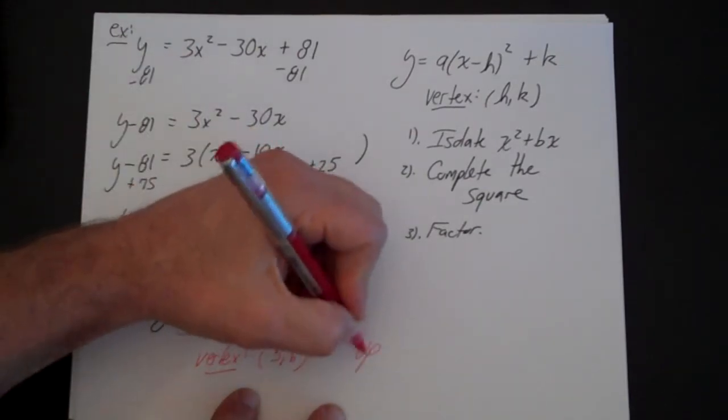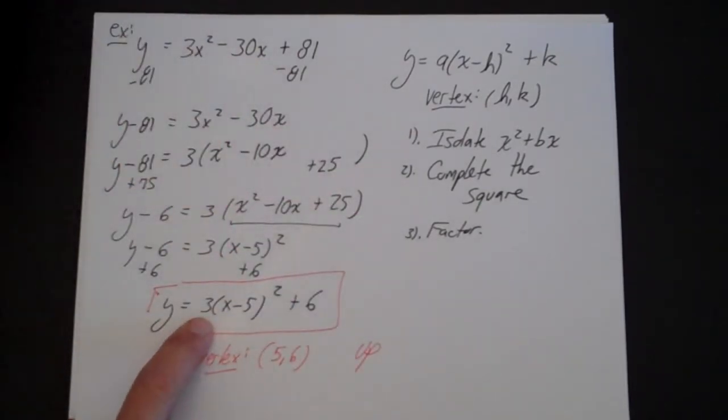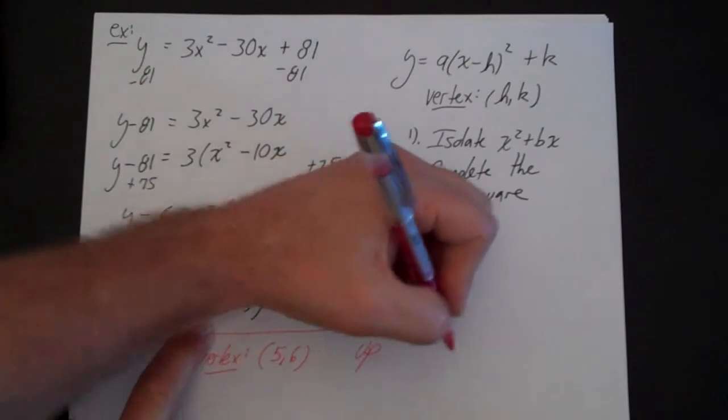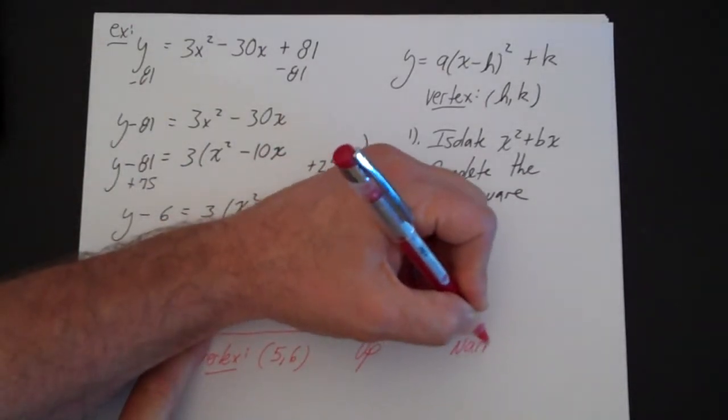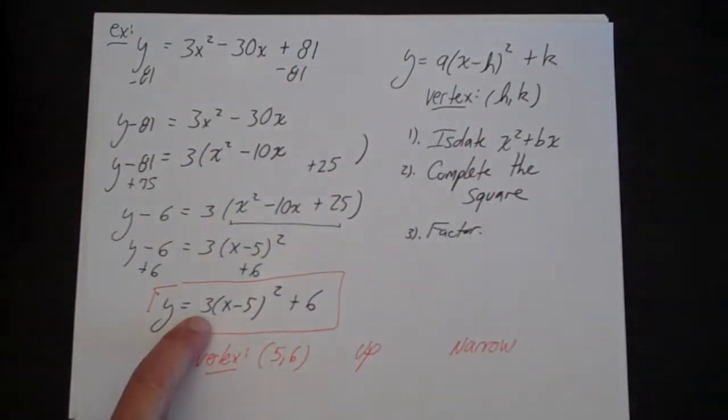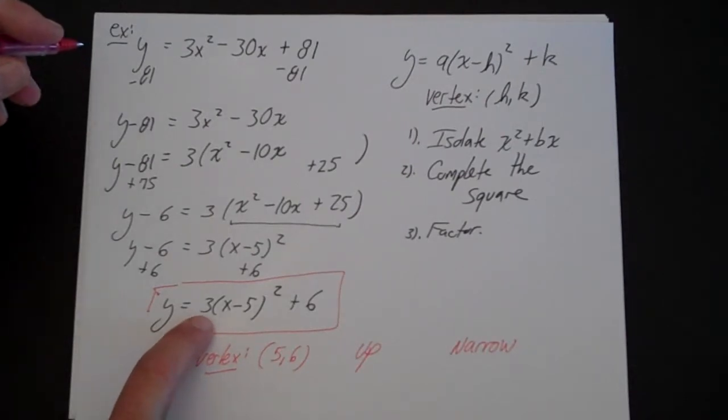And it's going to open up. The reason it opens up is that a here is going to be a positive number. And this is going to be a relatively narrow parabola because the absolute value of 3 is going to be greater than 1.